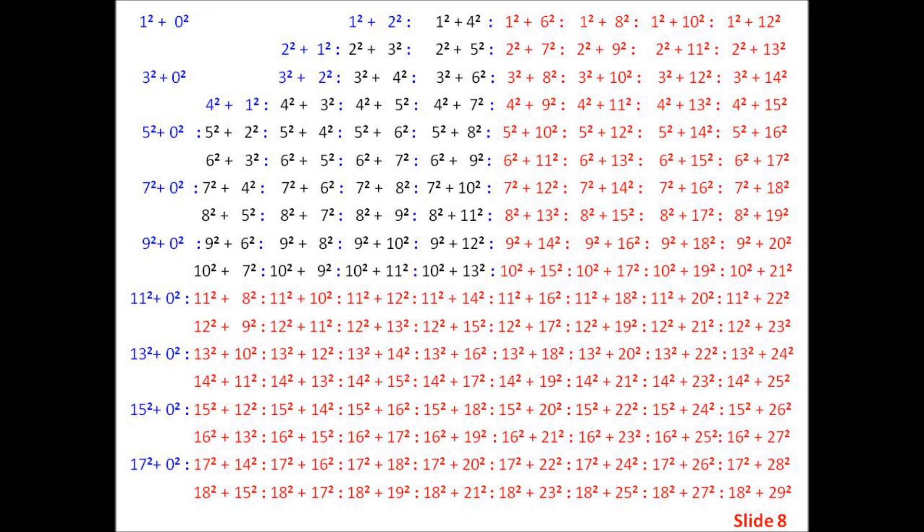So for me to conjecture that there might be a 4m plus 1 prime that was not a sum of two squares is just stupidity, with absolutely no mathematical foundation to justify it.